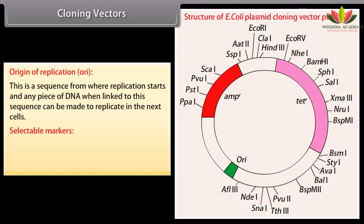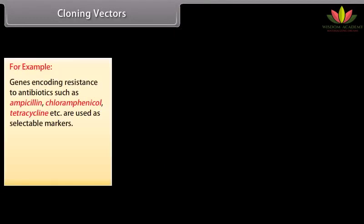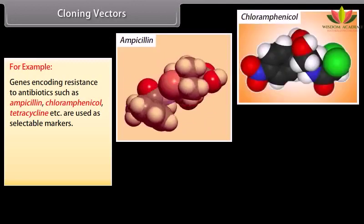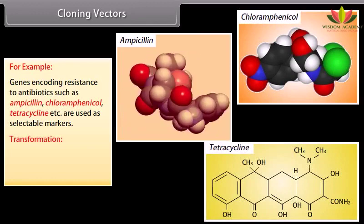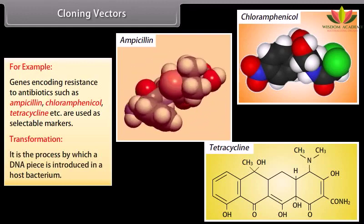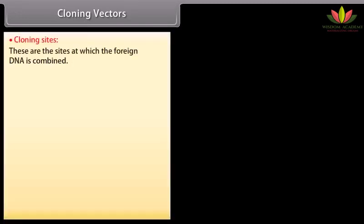Selectable markers. In addition to ORI, the vector requires a selectable marker which helps in identifying the transformants and non-transformants. For example, genes encoding resistance to antibiotics such as ampicillin, chloramphenicol, tetracycline, etc. are used as selectable markers. Transformation is a process by which a DNA piece is introduced into a host bacterium. Cloning sites — these are the sites at which the foreign DNA is combined.